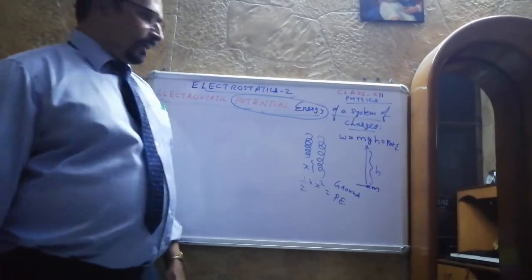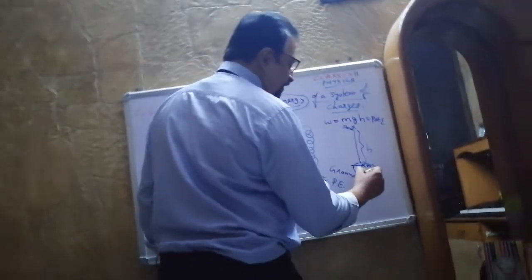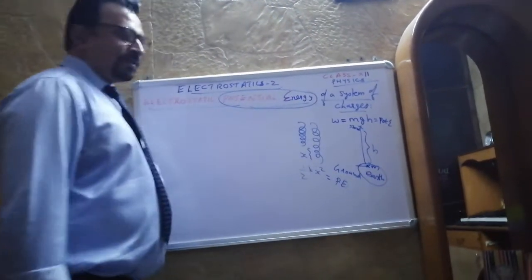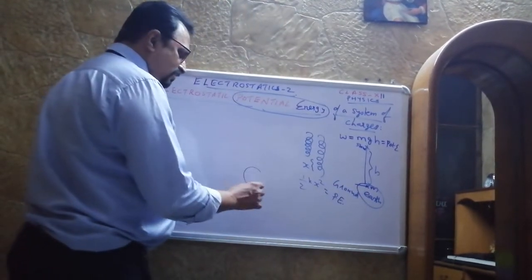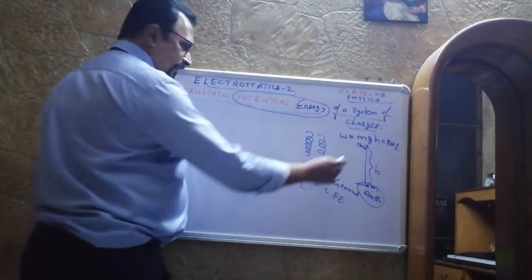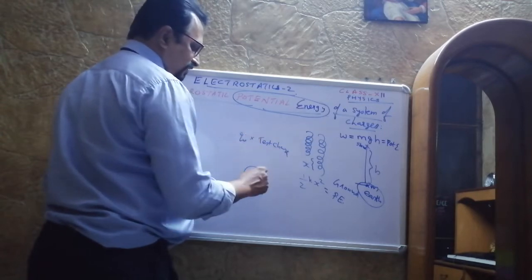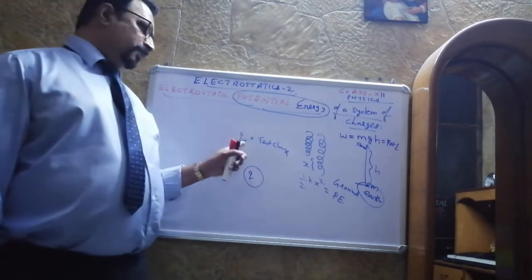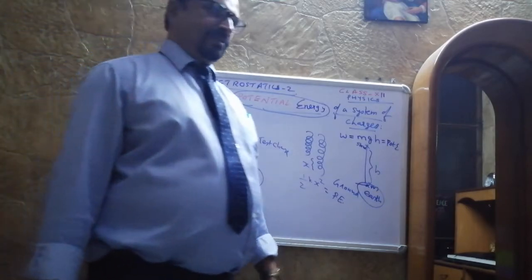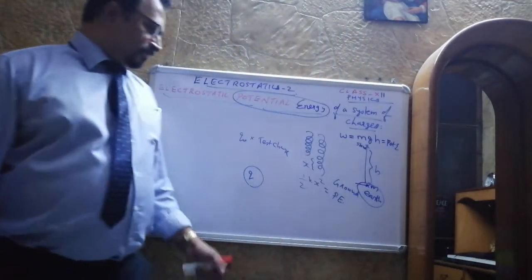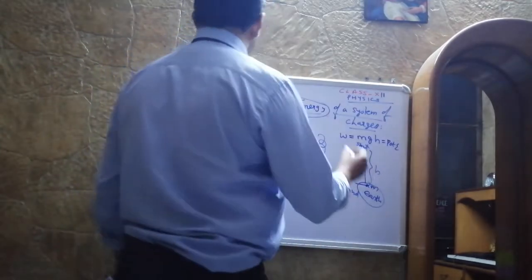Here you can see that you are displacing the stone, which is a small body in the gravitational field of a bigger body called Earth. In previous topics we compared this idea with electrostatics: instead of the source Earth we have a source charge q, and instead of the small stone we have a test charge q₀. So if you want to displace q₀ in the electric field of q, work is required, and that work done is defined in the form of electric potential as well as potential energy.